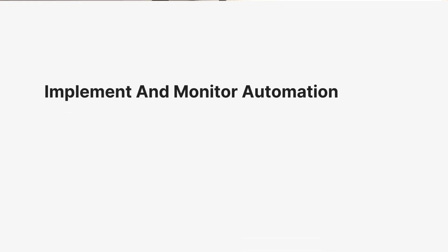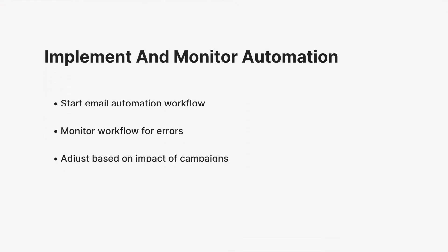Now that you have planned your campaign, organized your data, and checked that everything is ready to go, you can start implementing your email automation workflow. It's best to continue to monitor your automation workflow for any errors.